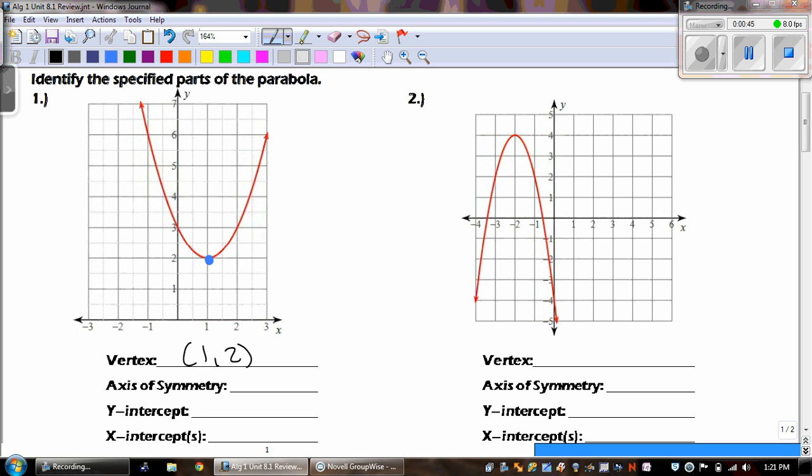Now, the axis of symmetry is the line that cuts your graph in half and it goes through the vertex. So for this one, it's an equation and x equals one. Like, Mr. Grice, how'd you get the one? We steal it from the vertex. Whatever the vertex x value is, that's what the axis of symmetry is.